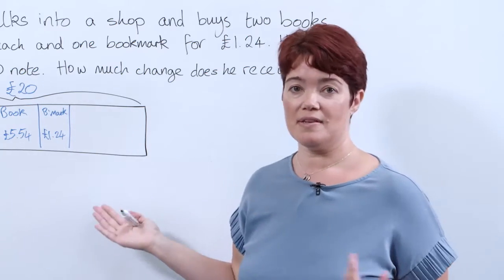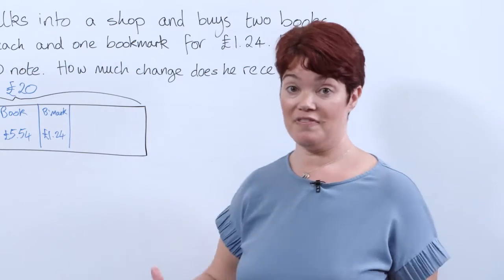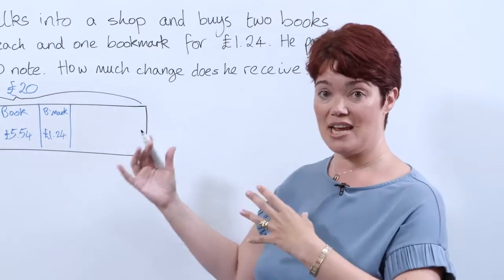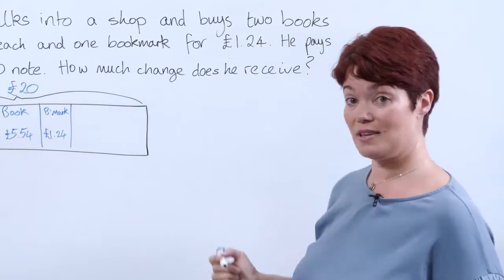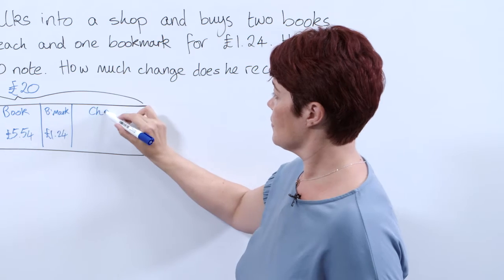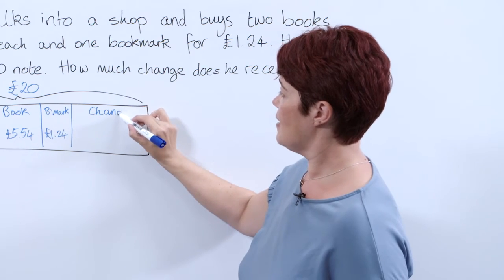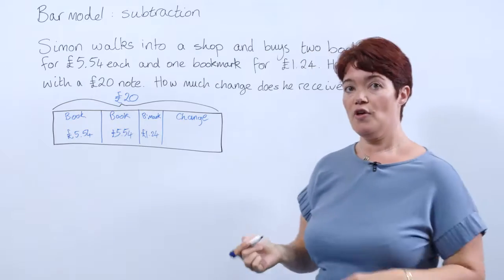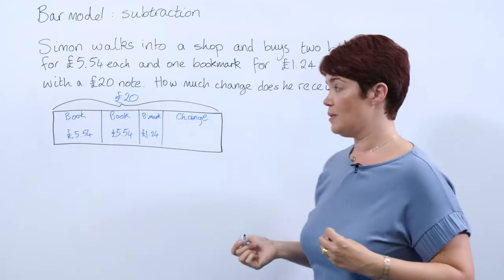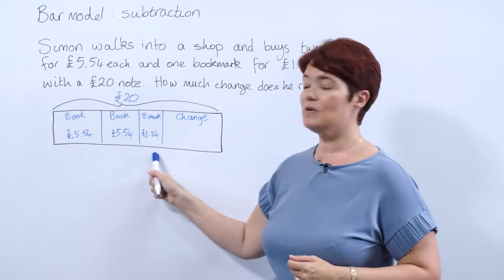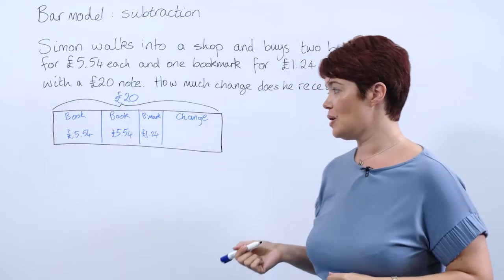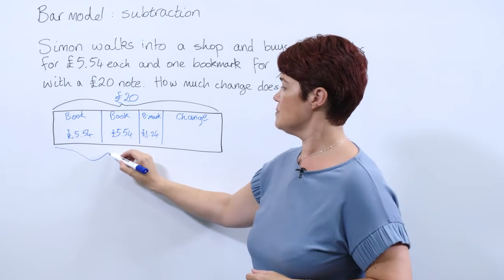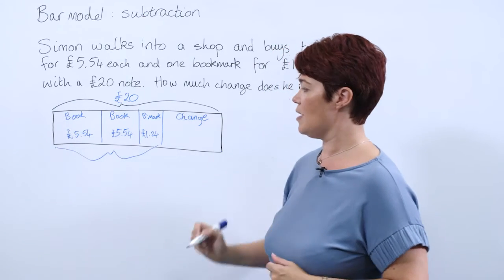So what could we label this with? Hopefully they come up with the idea that this is the change that Simon's going to receive, so we can label that with our change. So what else do we know? We can now work out how much he's spent in total, so we're going to work out this part of our bar.